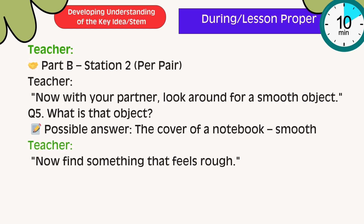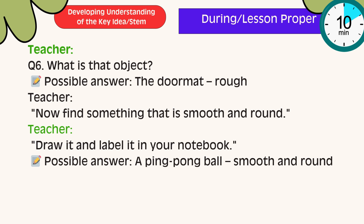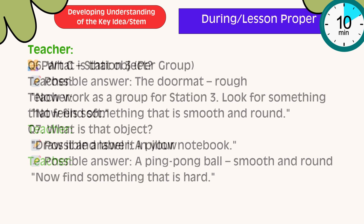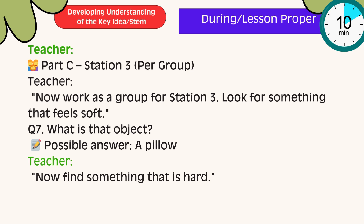Part B, Station 2: Now, with your partner, look around for a smooth object. Question 5: What is that object? A possible answer is the cover of a notebook, which is smooth. Now find something that feels rough. What is that object? A possible answer is the doormat — the doormat feels rough. Now find something that is smooth and round, draw it and label it in your notebook. A possible answer: a ping pong ball is smooth and round. You can continue discussing Parts C and D tomorrow if there is limited time.